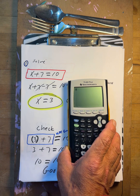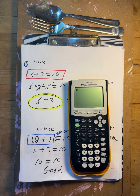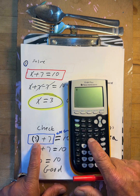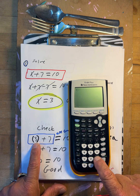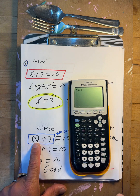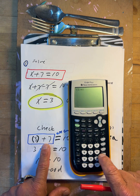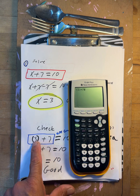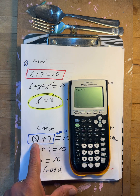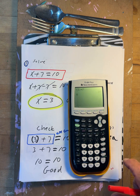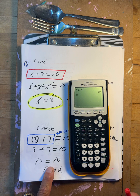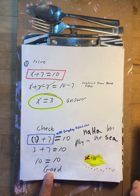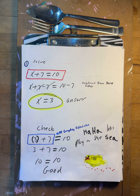I'll show you in the calculator. Put parentheses, three, then plus seven — let the graphing calculator do it. It says ten. Does it match? Yes, it works.